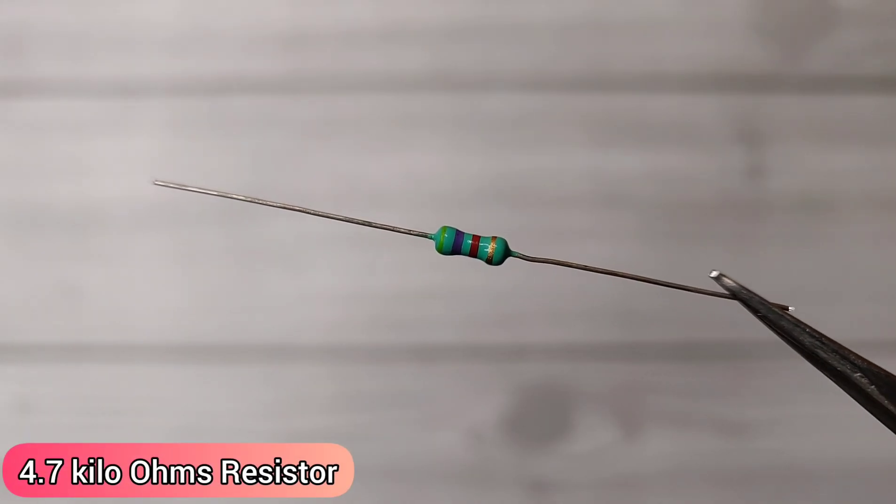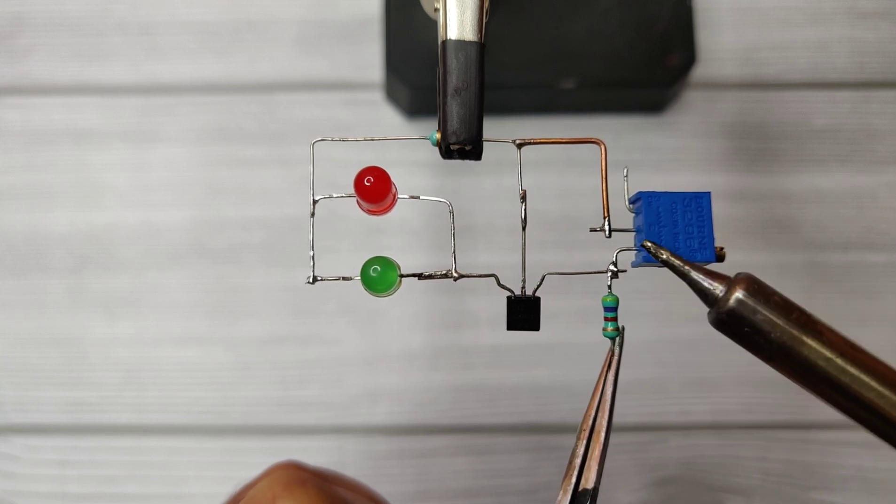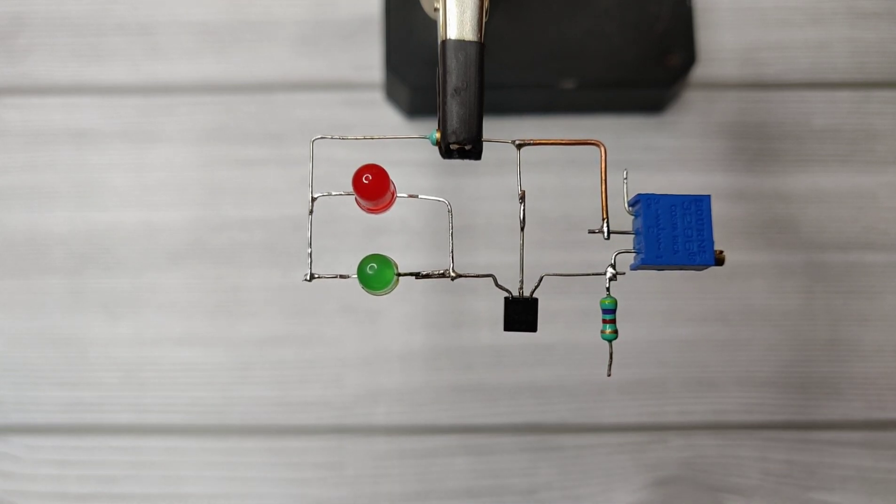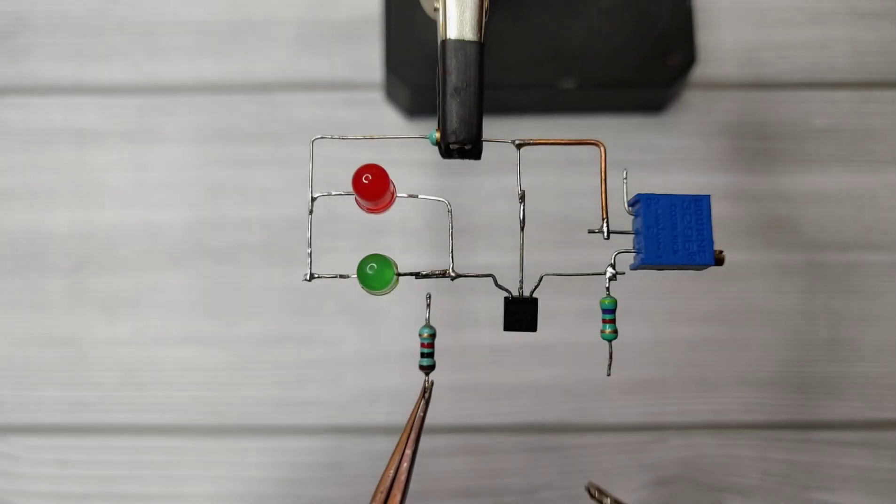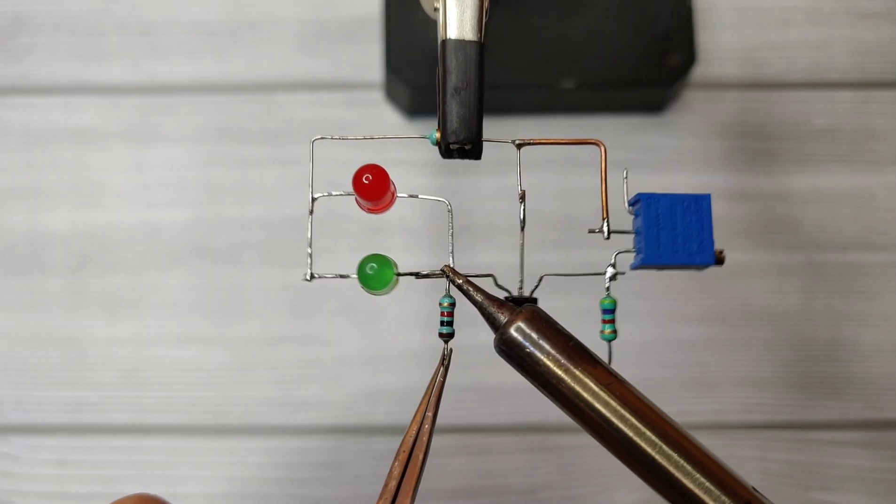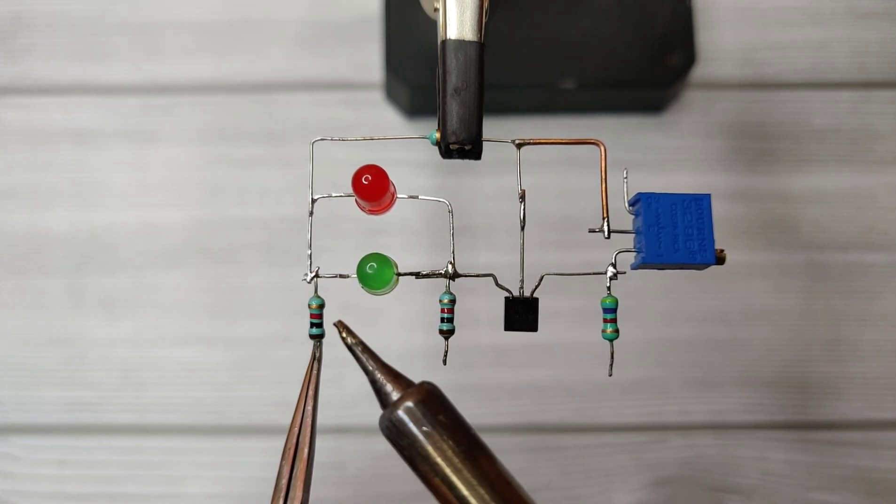Take a 4.7 kilo-ohm resistor and solder it on pin 1 of the shunt regulator. Take a 1 kilo-ohm resistor and solder on pin 3 of the shunt regulator. Solder another 1 kilo-ohm resistor here on the LEDs.